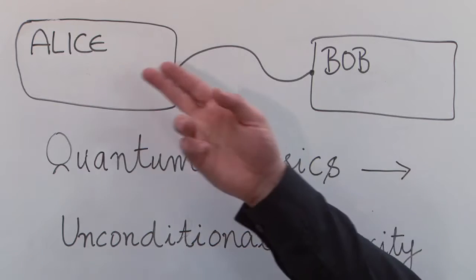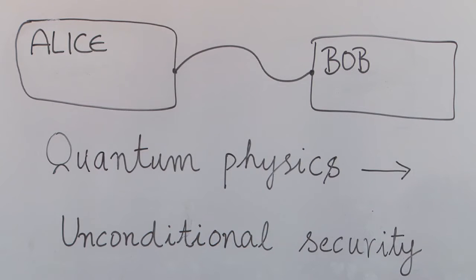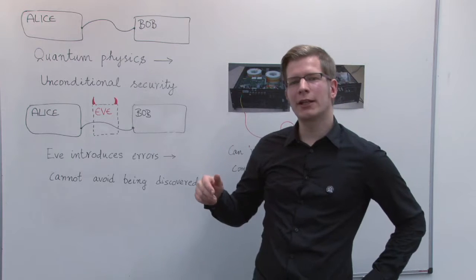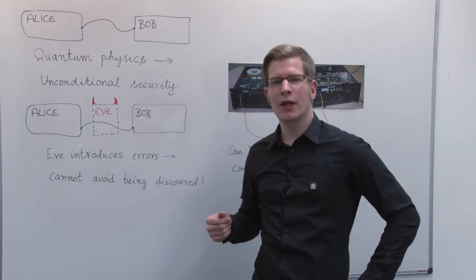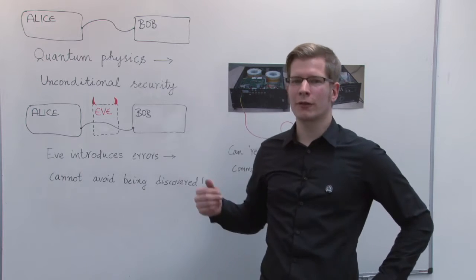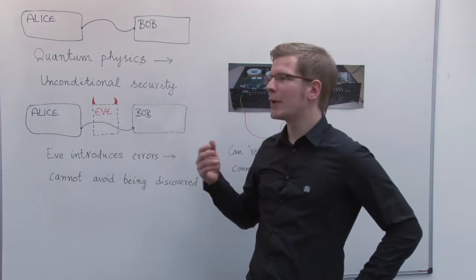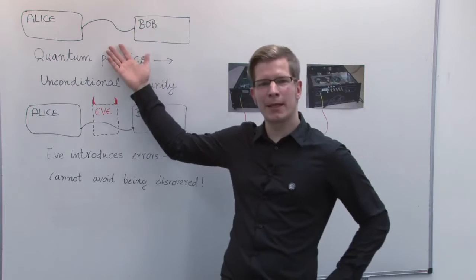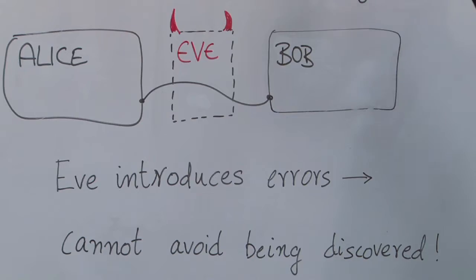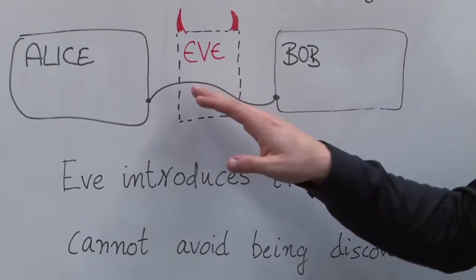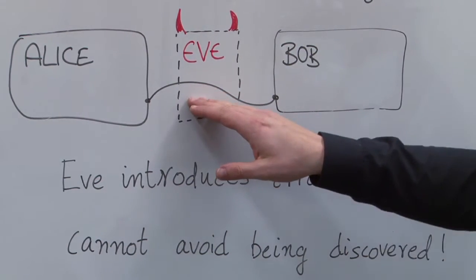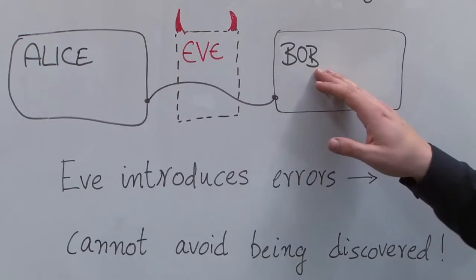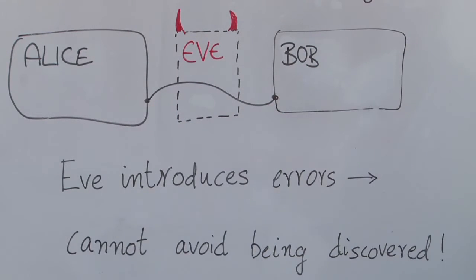Let's say that two parties, Alice and Bob, want to communicate. Then, in contrast to classical cryptography, quantum cryptography offers them a method with unconditional security, in principle. An adversary Eve cannot eavesdrop on the communication of Alice and Bob because she will introduce errors and is therefore detected.